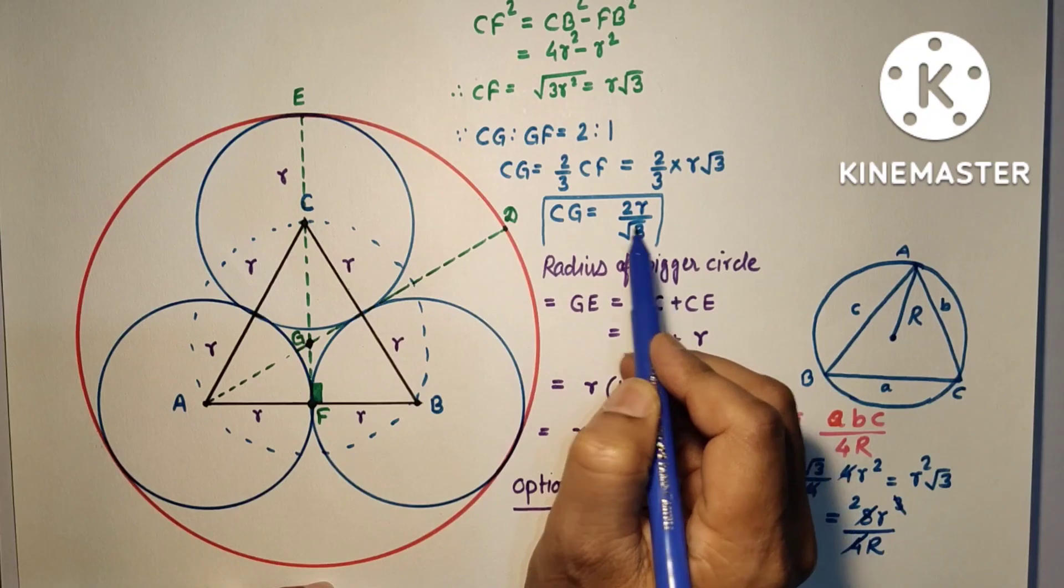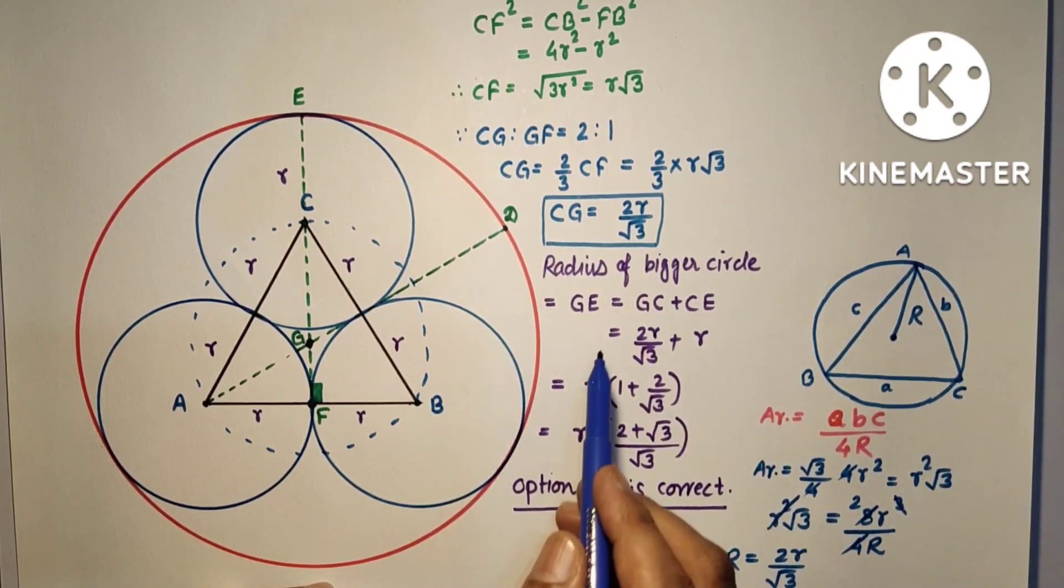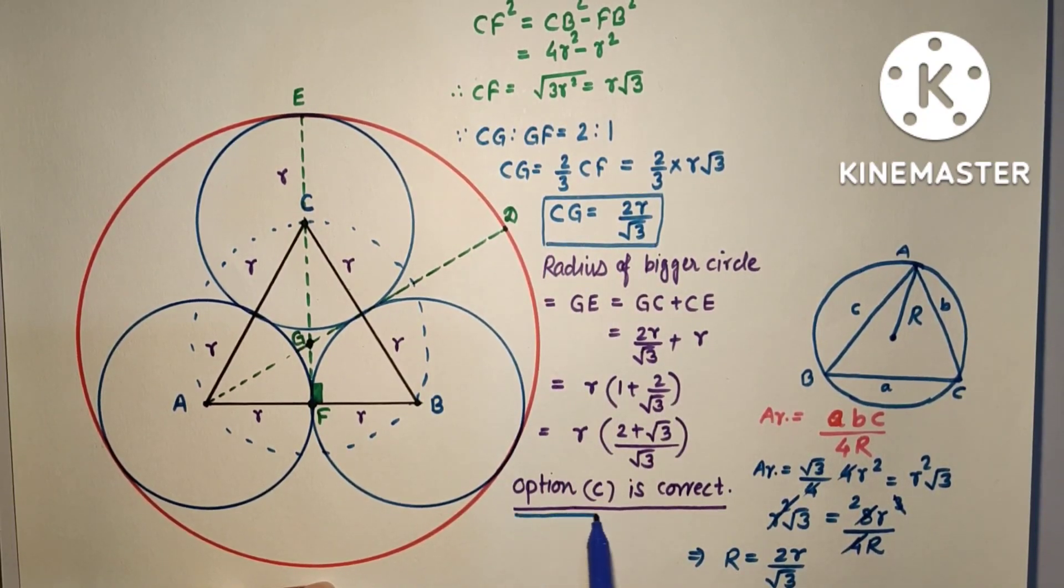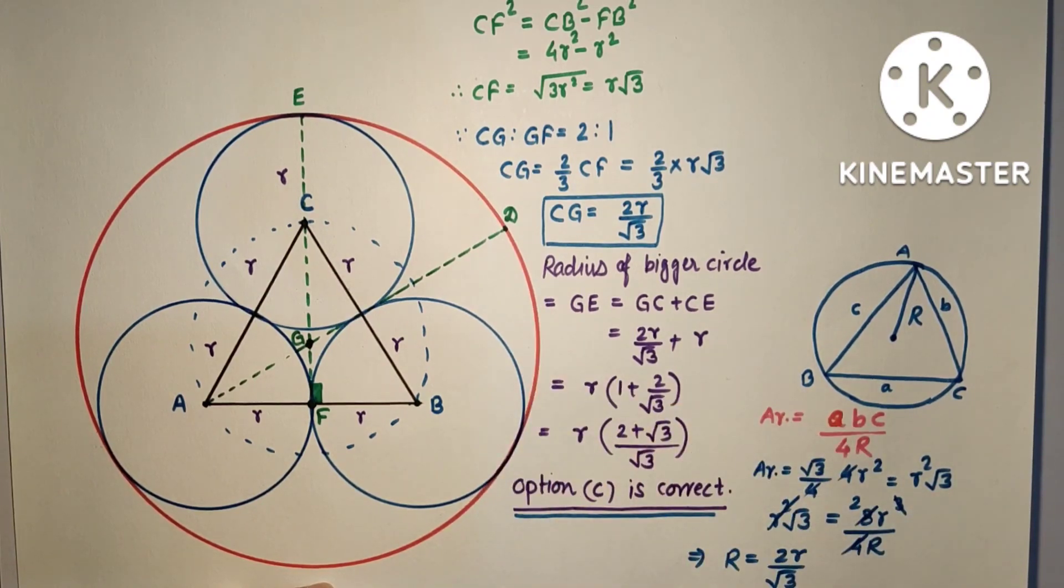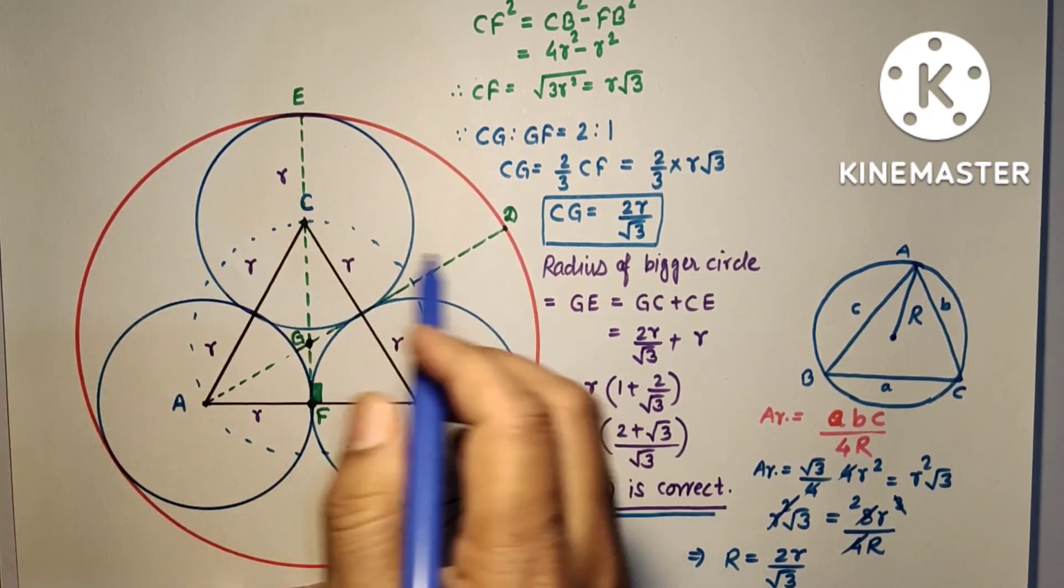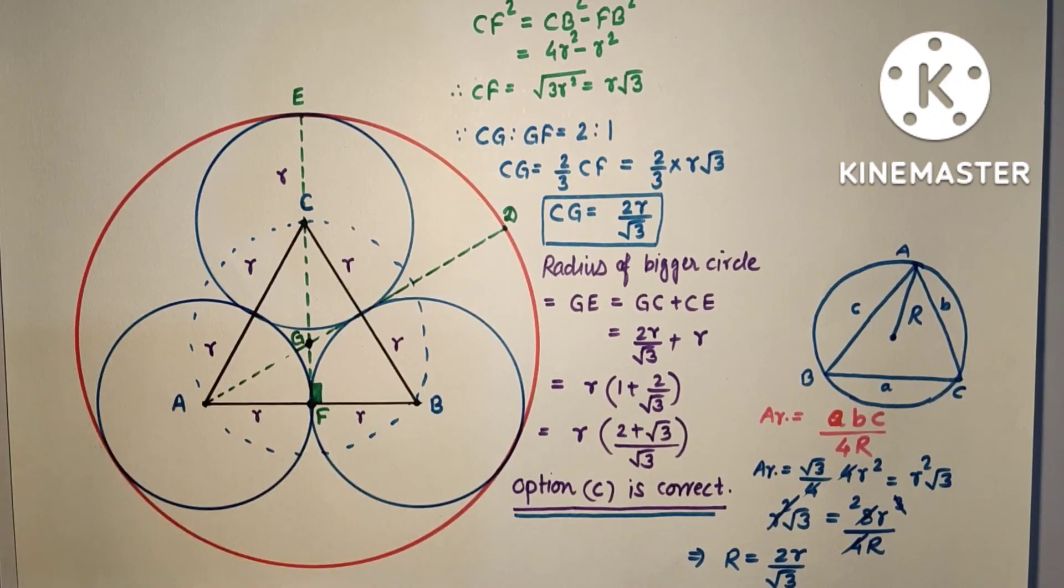This CG is equal to capital R. Now we can find this after getting R = 2R/√3, the same method we can use. So finally we found the radius of the bigger circle which touches all the three equal circles. That is the answer.